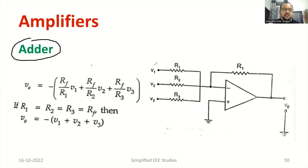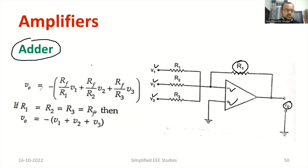You can observe the circuit. There are different input voltages V1, V2, V3 with input resistors R1, R2, R3, and a feedback resistor Rf. The inverting terminal and non-inverting terminal are identified, and V0 is the output voltage. Since it is connected to the negative terminal, it acts as an inverting amplifier. The output voltage can be collectively written as: V0 equals negative of Rf/R1 into V1, plus Rf/R2 into V2, plus Rf/R3 into V3.